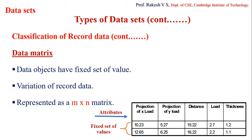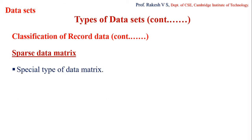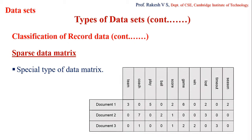Since data matrix concerns only numeric values, standard matrix operations — like transformations or manipulations — can be applied to it. The sparse data matrix is a special type of data matrix where the attributes are of the same type and are asymmetric in nature. It contains n number of attributes and data objects with asymmetric values.